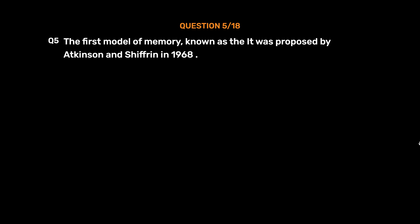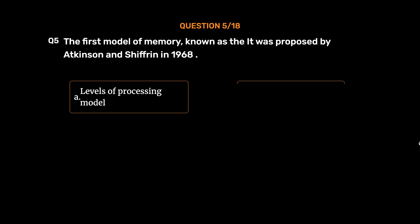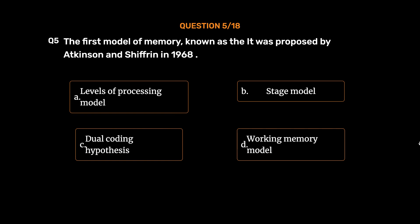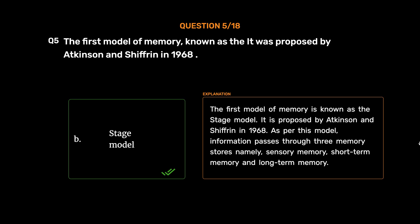Question number 5. The first model of memory was proposed by Atkinson and Schiffrin in 1968. Option A: Levels of Processing Model. Option B: Stage Model. Option C: Dual Coding Hypothesis. Option D: Working Memory Model. The correct answer is Option B, Stage Model. As per this model, information passes through three memory stores: sensory memory, short-term memory, and long-term memory.